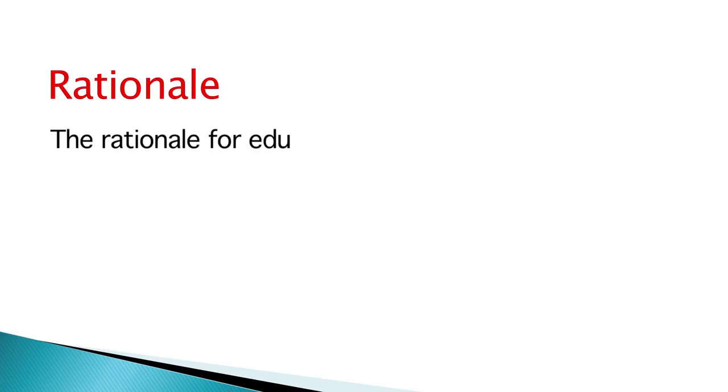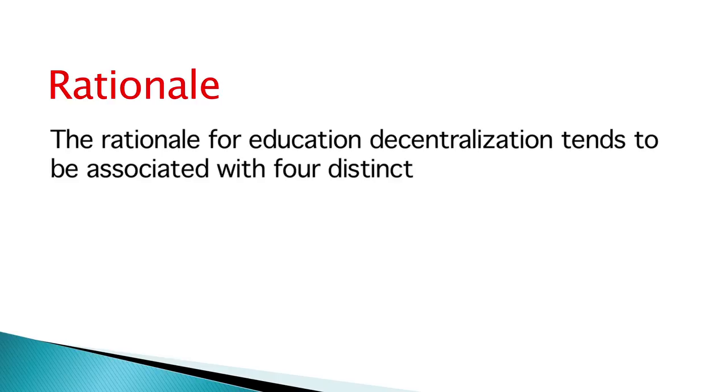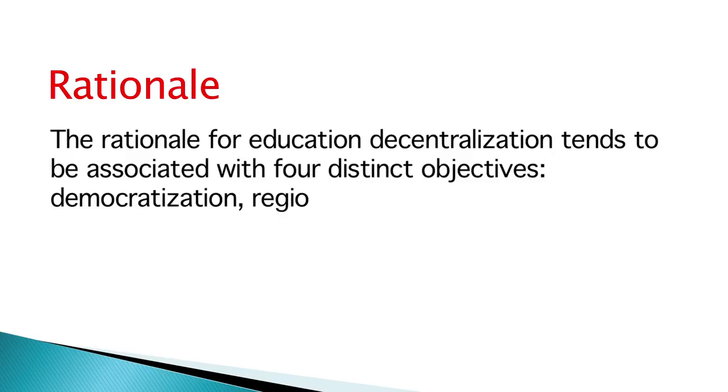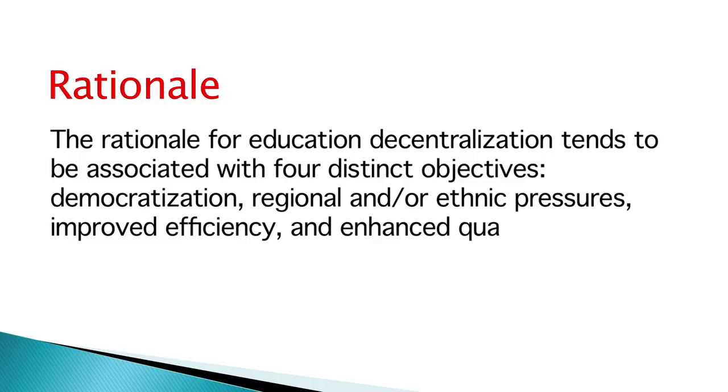Now, we would discuss the rationale of decentralization — why decentralization is needed and what is the requirement. The rationale for educational decentralization tends to be associated with four distinct objectives: first, democratization; second, regional and/or ethnic pressures; third, improved efficiency; and fourth, enhanced quality of schooling. These four objectives account for most, but not all, of the reasons for educational decentralization.